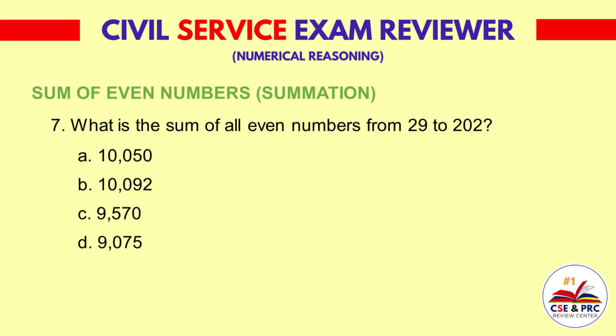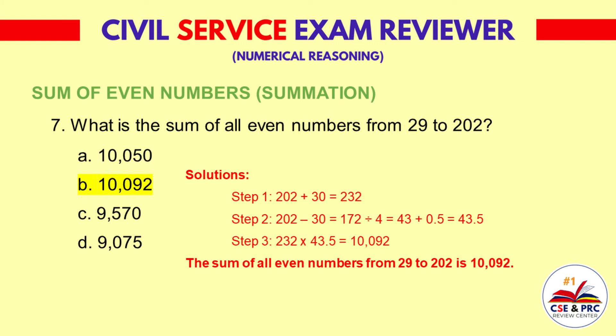Question 7: What is the sum of all even numbers from 29 to 202? a. 10,050  b. 10,092  c. 9,570  d. 9,075. The answer is b. 10,092.